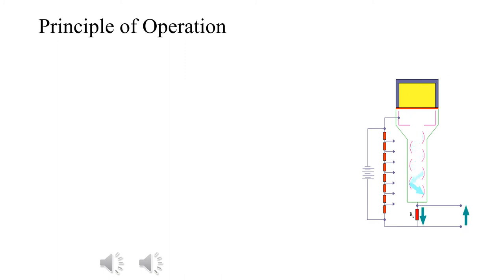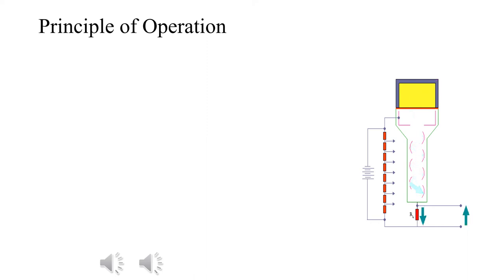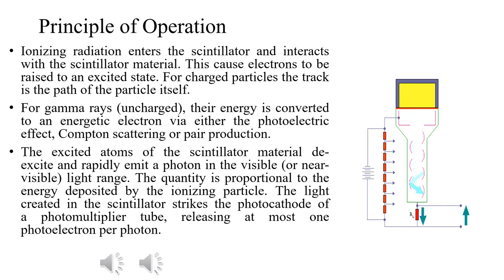Ionizing radiation enters the scintillator and interacts with the scintillator material. The electrons in the material are excited to a higher energy state. For uncharged ionizing radiation, this occurs through the photoelectric effect, Compton effect, or pair production. The scintillator material, now in the excited state, returns to the de-excited state by emitting a photon in the visible range. The amount of light produced depends upon the energy of the ionizing particle.